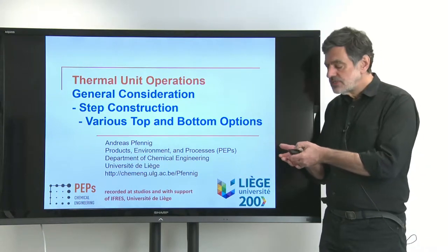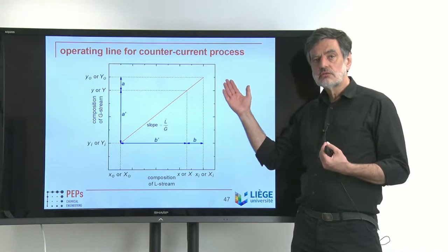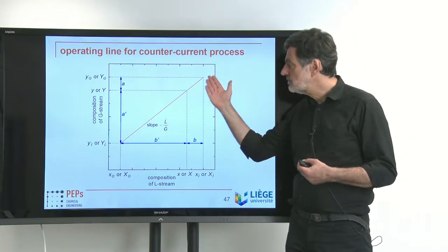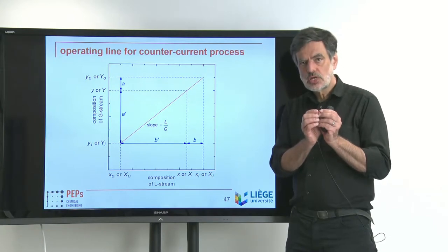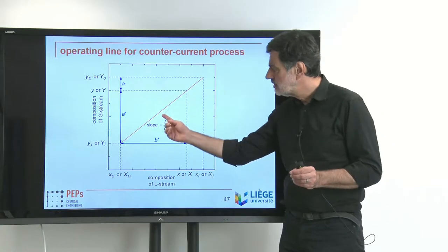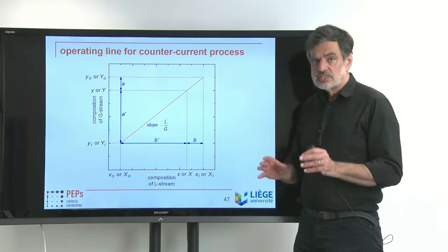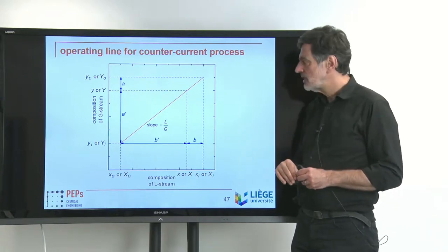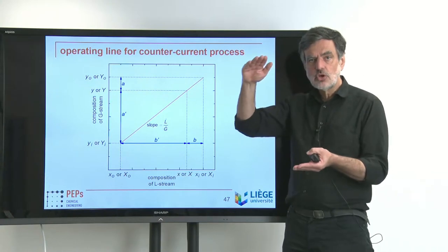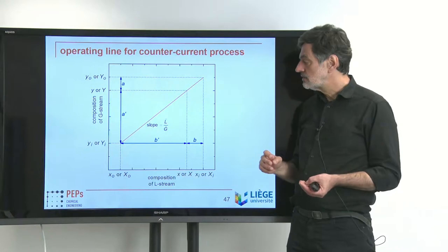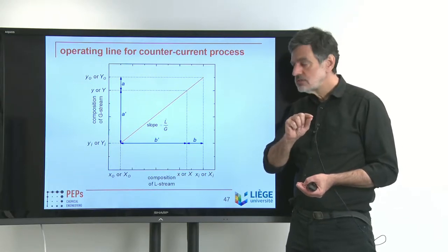Before we focus on these different options, let us look back at what we found. We realize that the flow rate compositions found in the counter-current process can be represented by an operating line. Whenever two flow rates meet somewhere in the counter-current process, their compositions have to lie on this operating line. The operating line has the slope L̇ over Ġ at that point of the process for which we set up the balance.